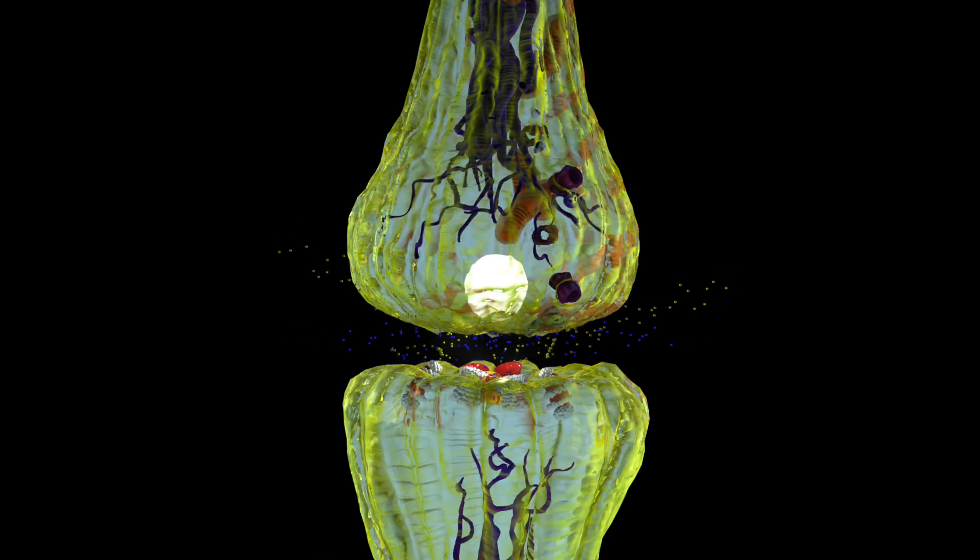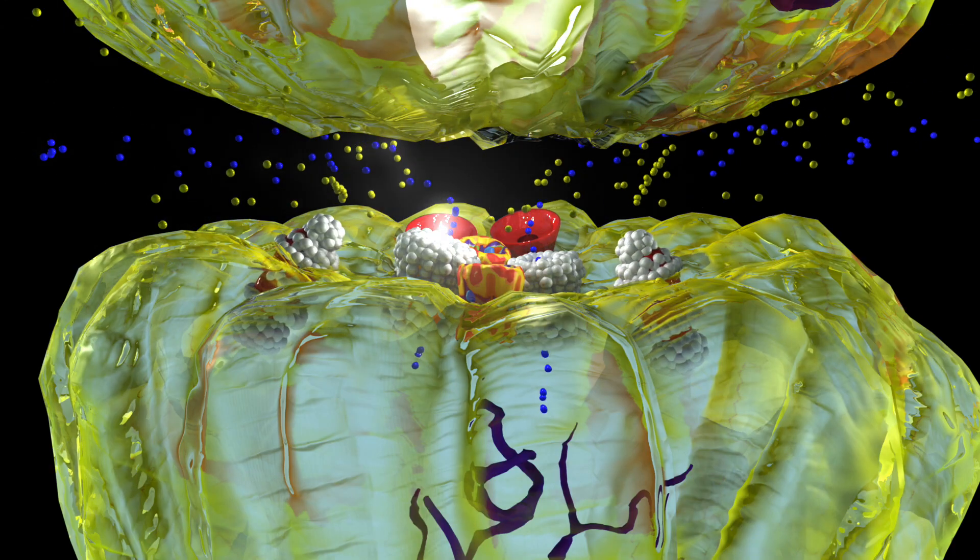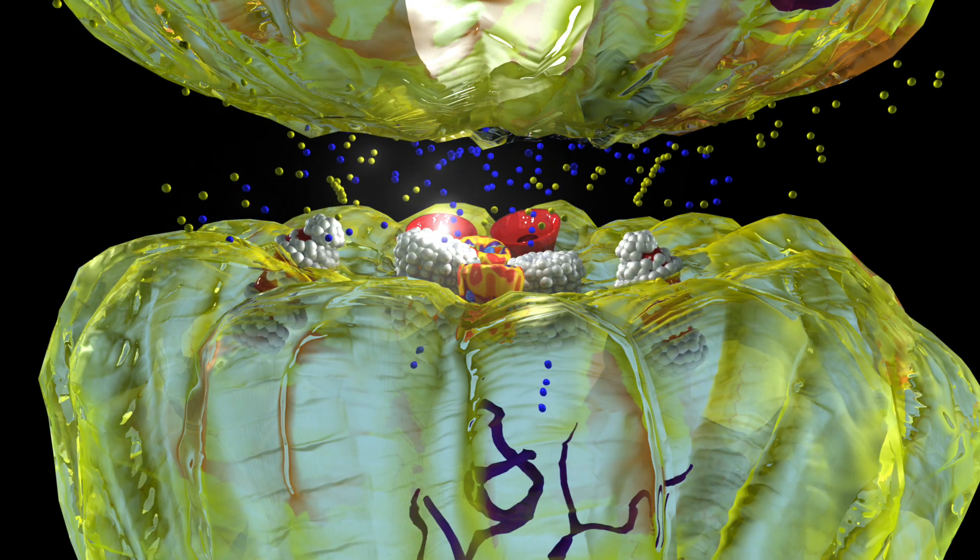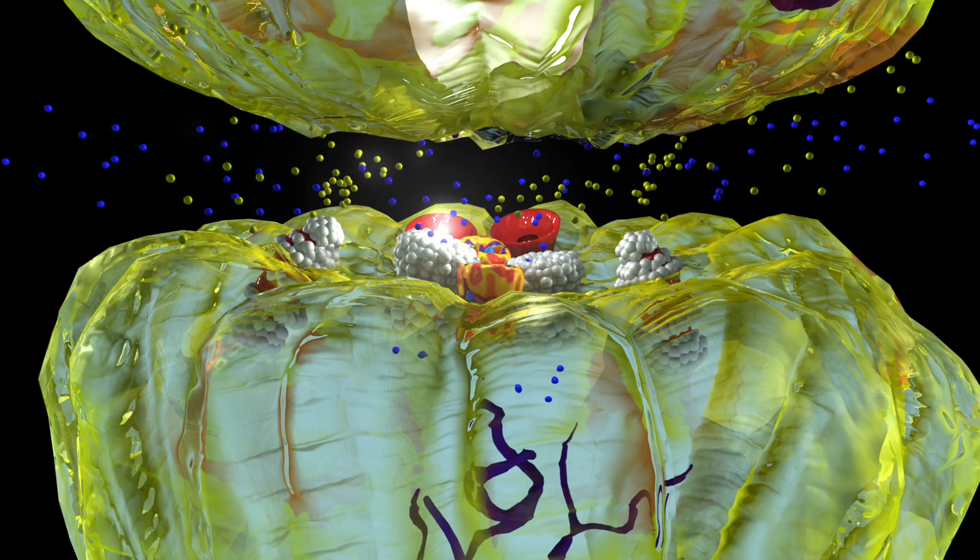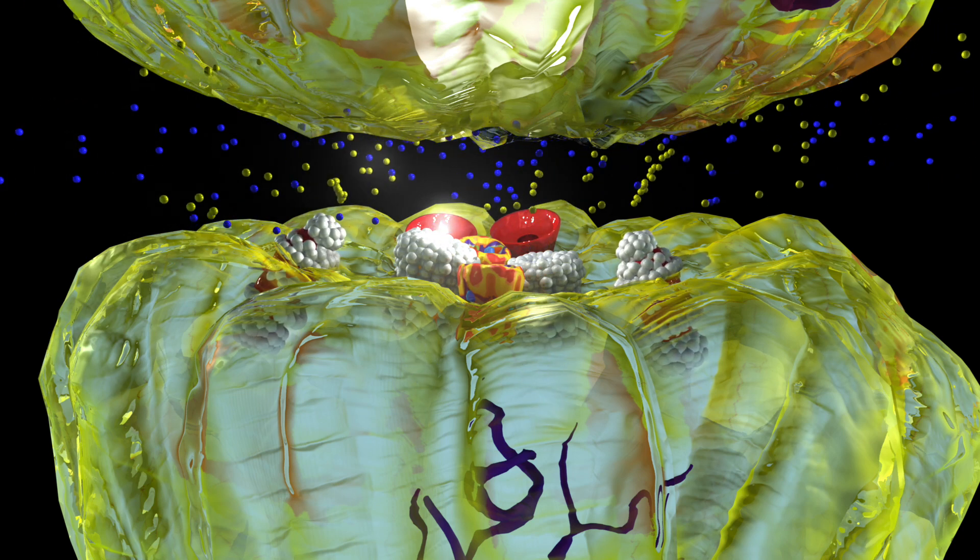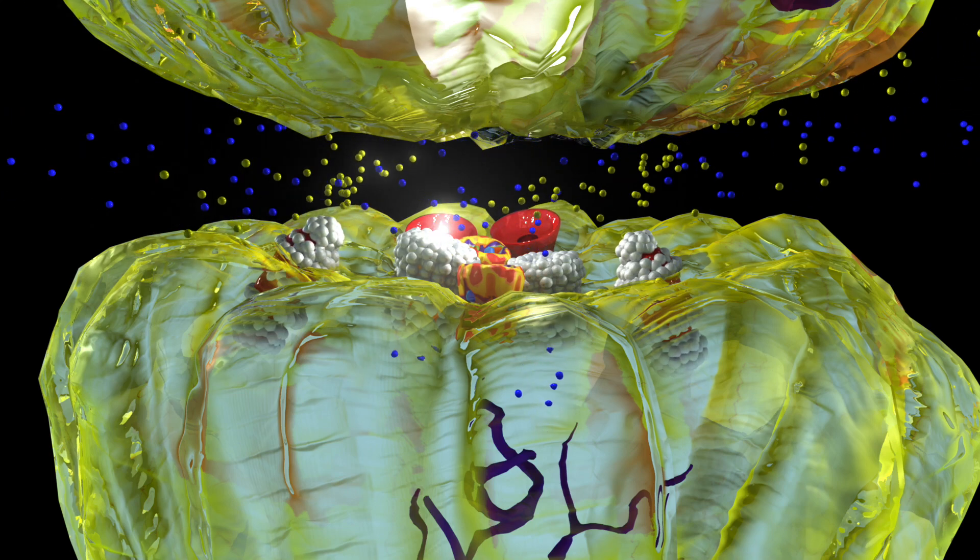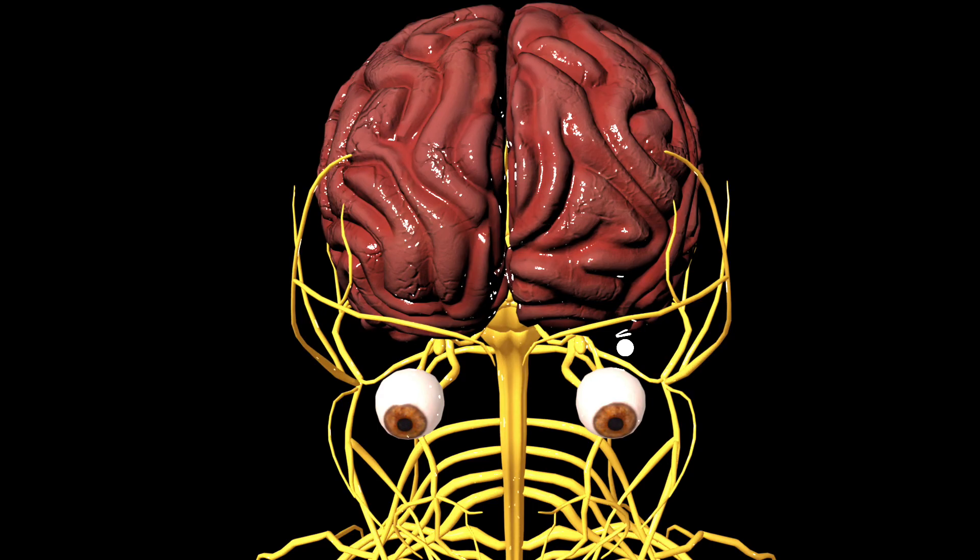When topiramate binds to the GABA receptor, it increases the frequency that the receptor opens. With chloride, the negatively charged ion, entering more frequently, the electrical signal is stopped more potently. With the electrical signal reduced, electrical conduction in the brain is stabilized.